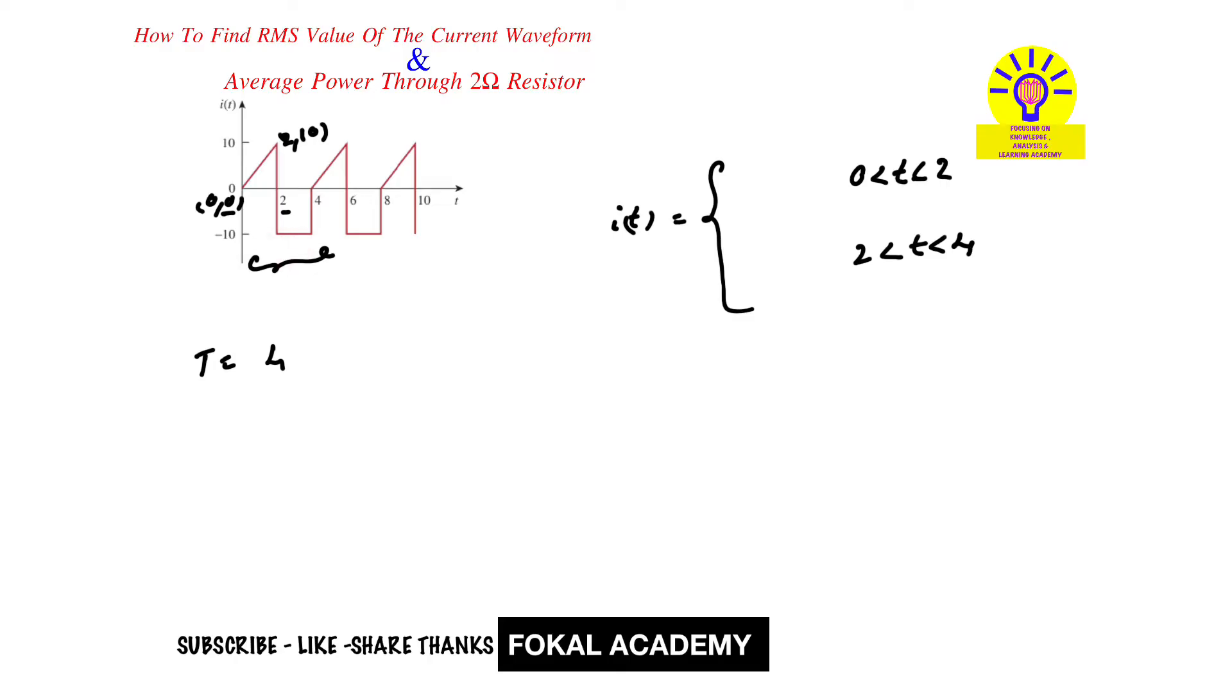So here 2 to 4, the current is constant, that is minus 10. Now here we want the equation from 0 to 2, that is (0,0) to (2,10). So by applying point-slope line equation formula, we will get line equation. That is equal to 5t, and this is the current equation for the given waveform.